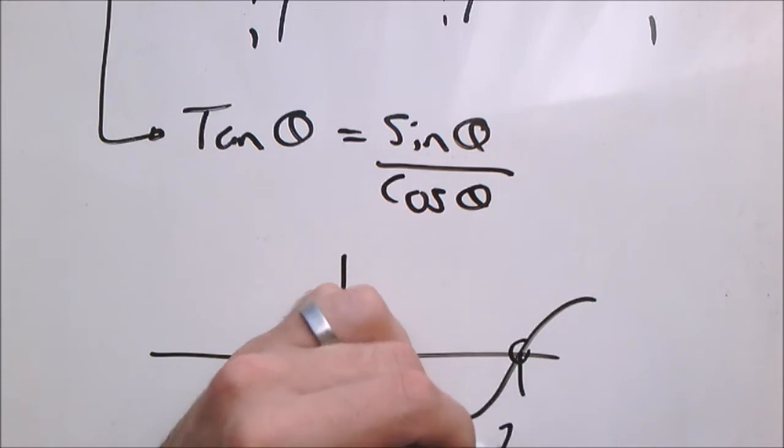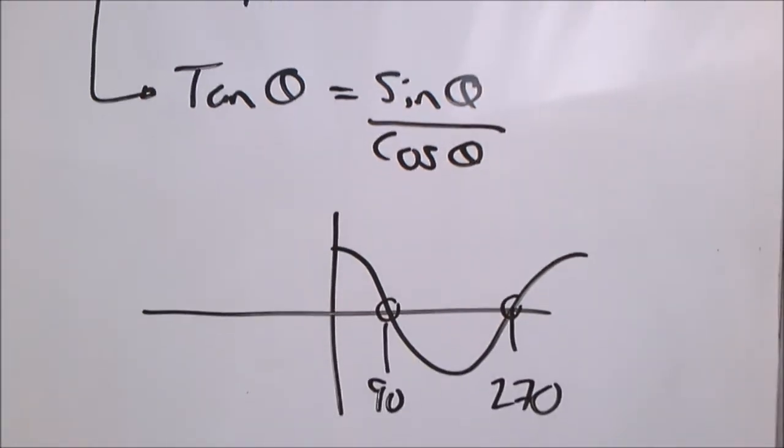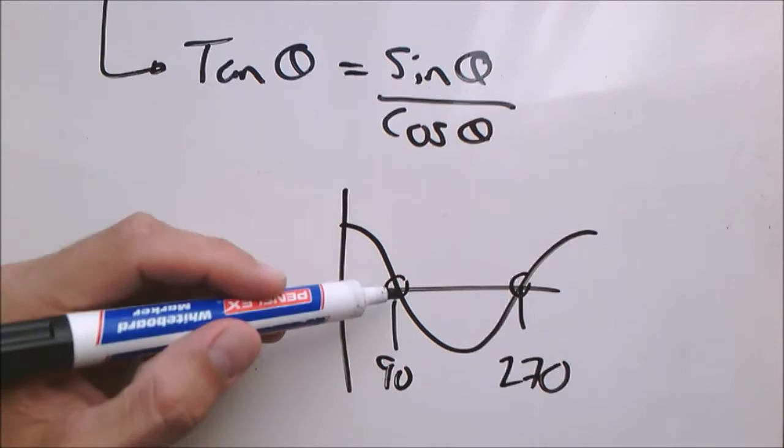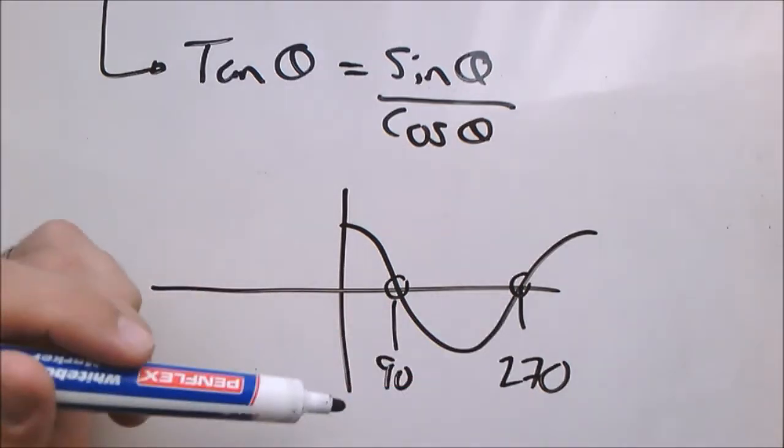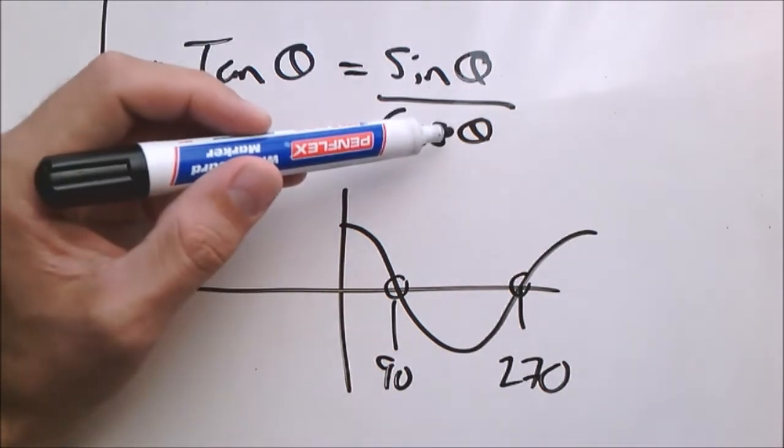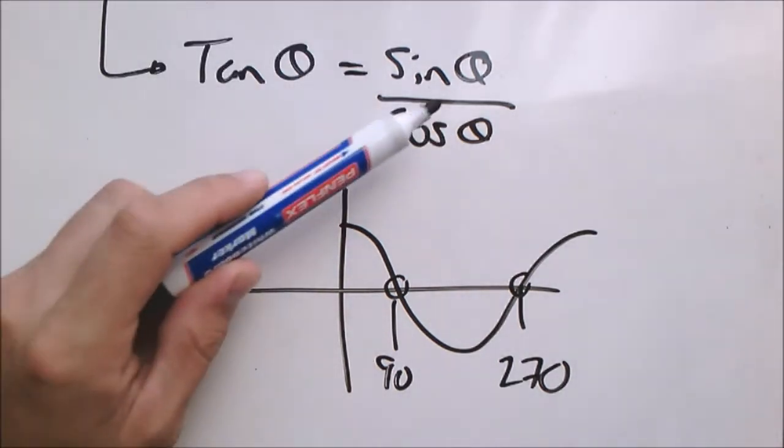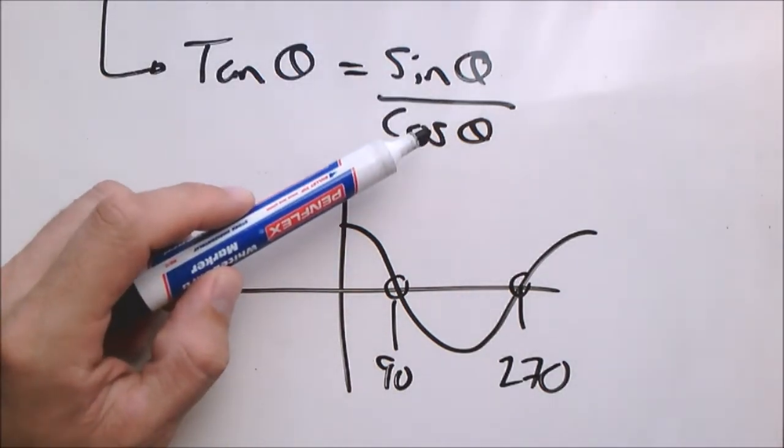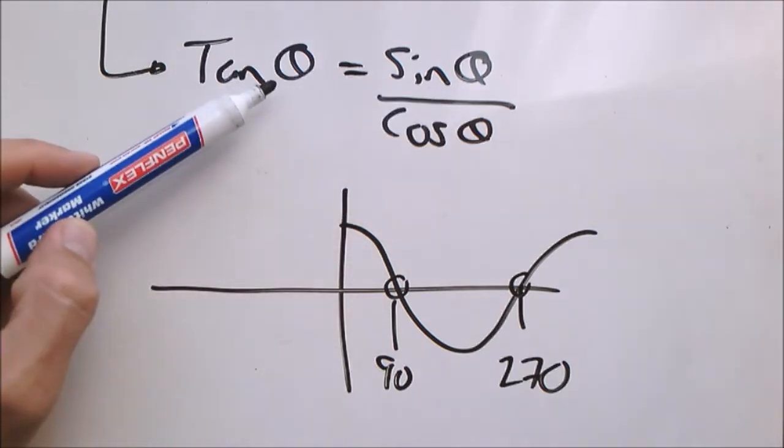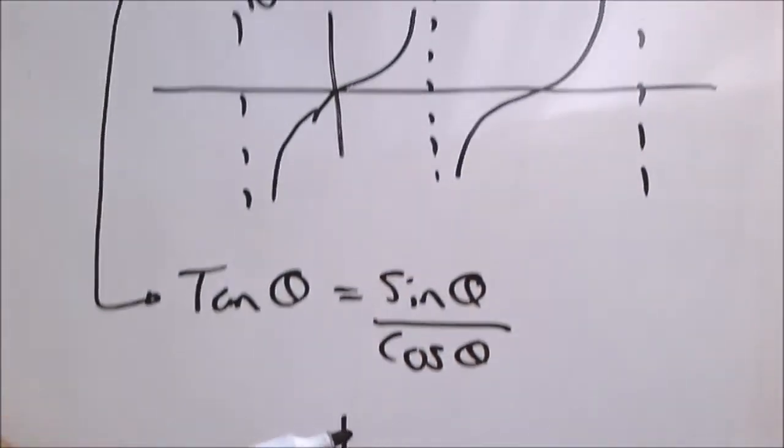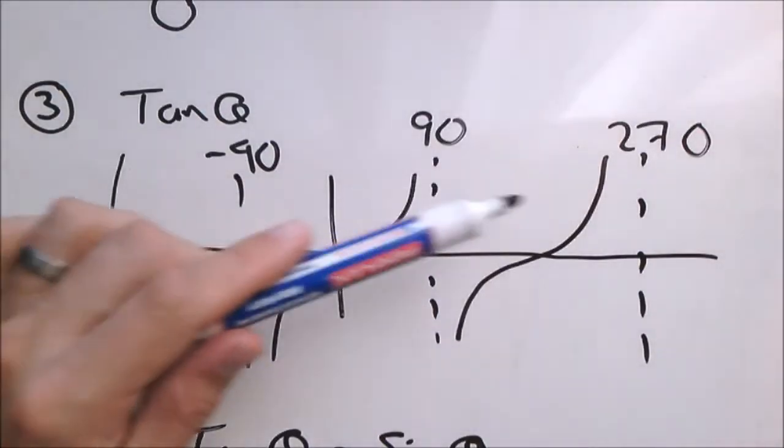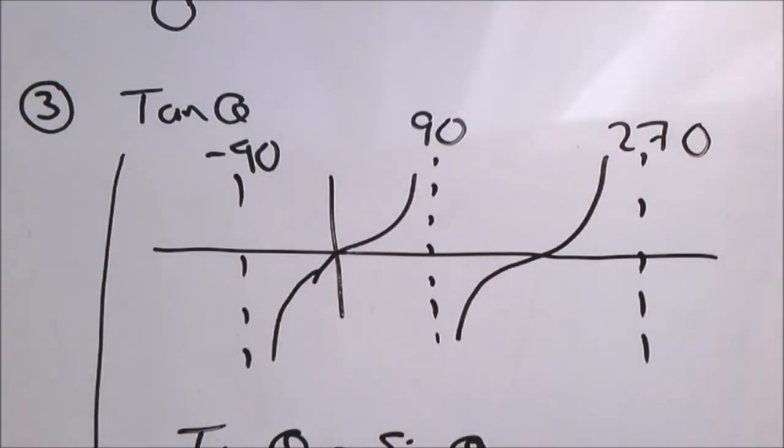Right over there at 90. And right over there at 270. So at these points x coordinates of 90 and 270 cos theta is 0. In other words you are dividing by 0. Making tan theta undefined at those points. And that is why we have asymptotes at those two points and every 180 degrees.